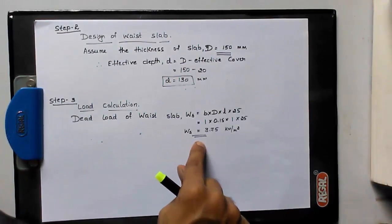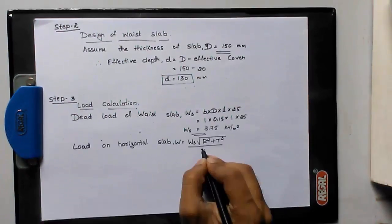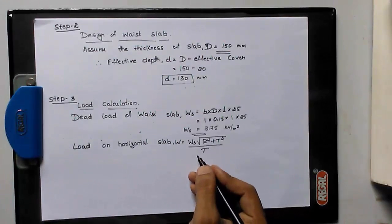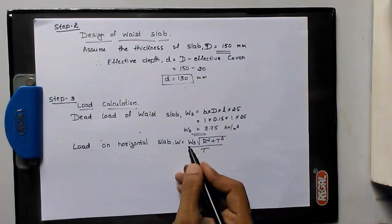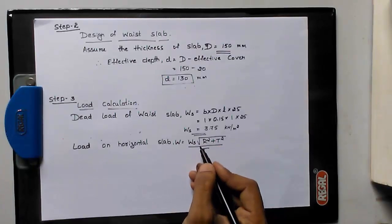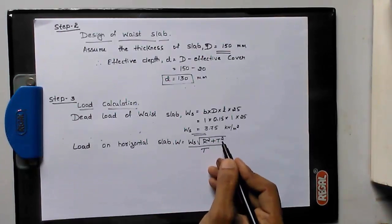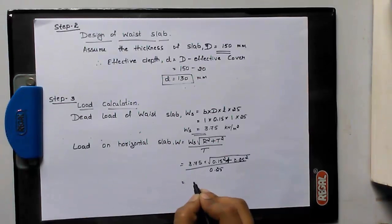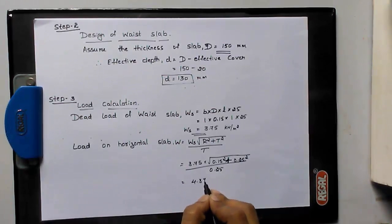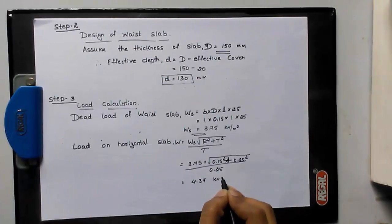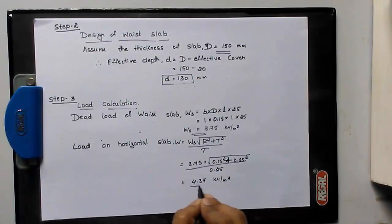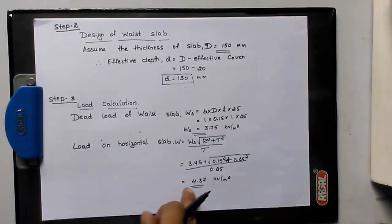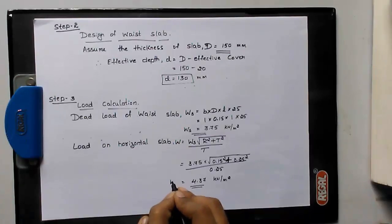To convert the inclined load to horizontal form, the formula is: w = ws × √(R² + T²) / T, where R is the riser and T is the tread. Substituting the values, we get w = 4.37 kN/m². This is the dead load of the waist slab on a horizontal basis.